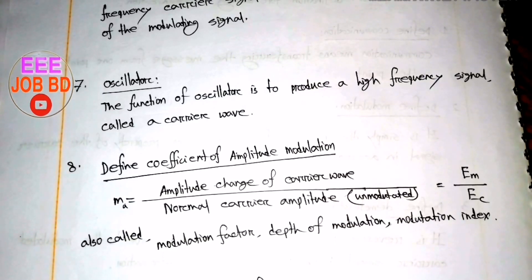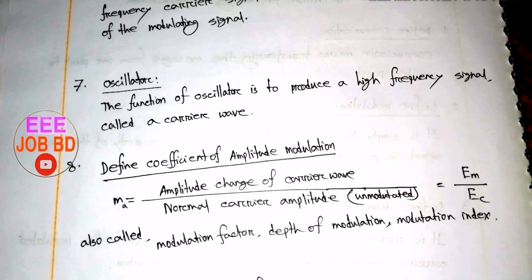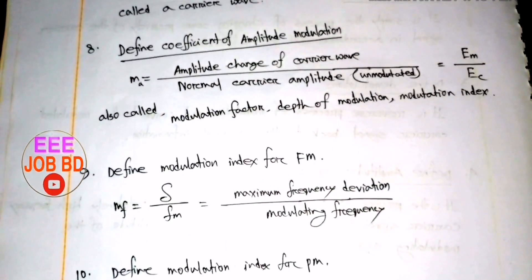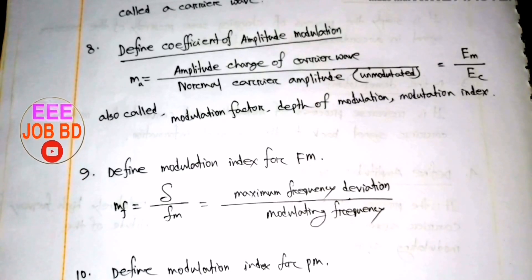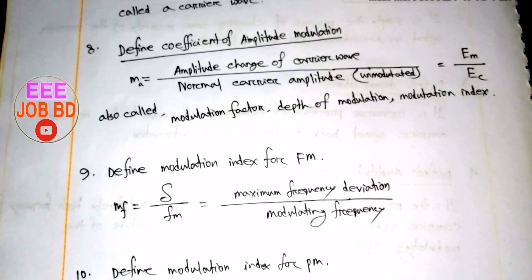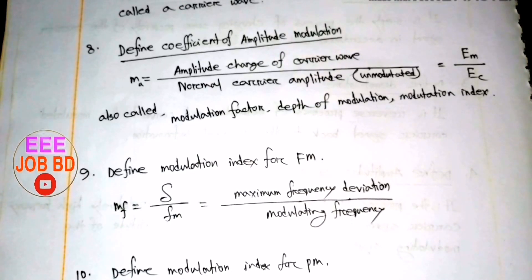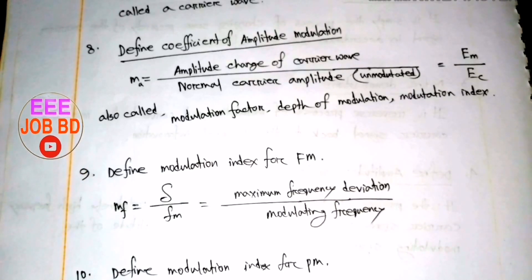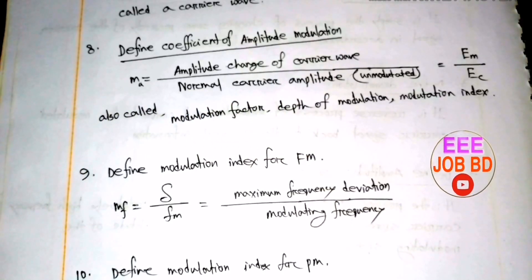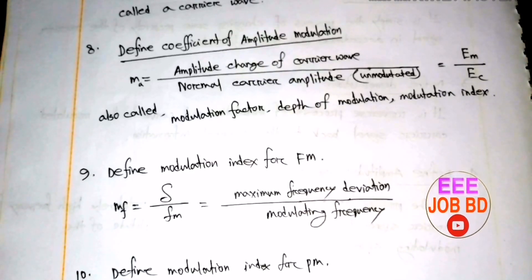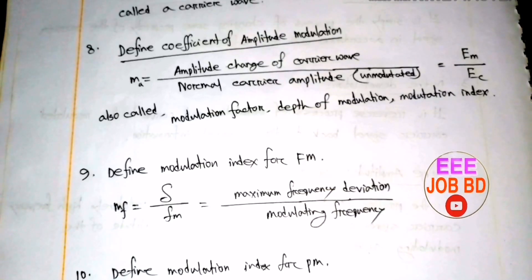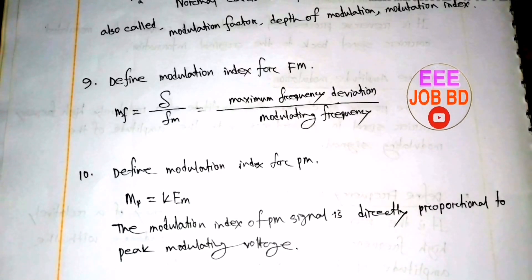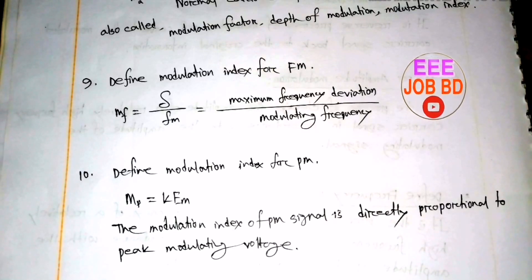Modulation Index for AM: Em divided by Ec, where Em is the modulating signal amplitude and Ec is the carrier wave amplitude. Modulation Index for FM: MF equals delta-F divided by FM, where delta-F is the maximum frequency deviation and FM is the modulating frequency. Modulation Index for Phase Modulation is also MF.